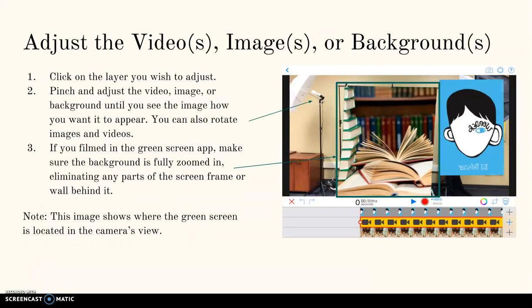Now that you see your images and backgrounds, click on their layers, one or three, to adjust them while on screen. Pinching and adjusting the images will allow you to preview where you appear in relation to your background and images. Make sure to eliminate any parts of the screen's frame and the wall behind it. Note, this image shows where the green screen is located in the camera's view before zooming.